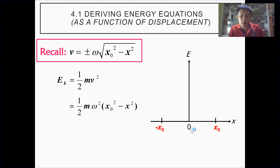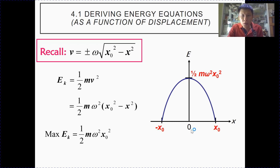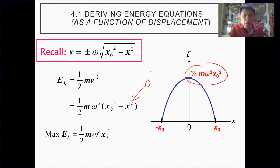The graphical representation of this expression looks like this. Note that at the two extreme points, when the displacement is x₀, the expression gives us the value of zero. So kinetic energy is zero at the two extreme points. Kinetic energy is maximum at the equilibrium position when the displacement is zero, and this maximum value is given by the expression when you substitute zero into x.